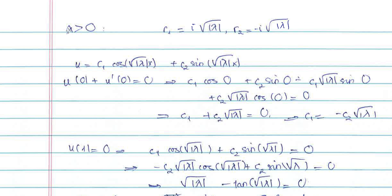The second case: when lambda is positive, you find two roots i*sqrt(lambda) and -i*sqrt(lambda), giving two solutions cos(sqrt(lambda)*x) and sin(sqrt(lambda)*x). You take the linear combination and apply the boundary condition at 0: u(0) + u'(0) = 0. Here u(0) = c1*cos(0) + c2*sin(0), and u'(0) = -c1*sqrt(lambda)*sin(0) + c2*sqrt(lambda)*cos(0). This gives c1 + c2*sqrt(lambda) = 0 because sin(0)=0 and cos(0)=1.